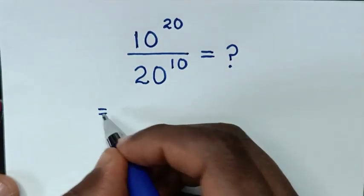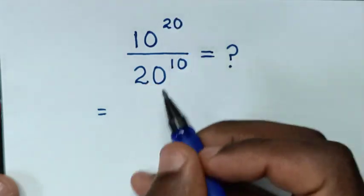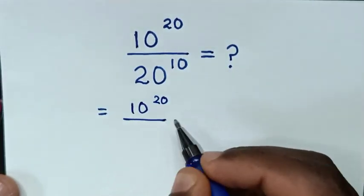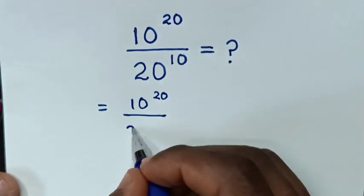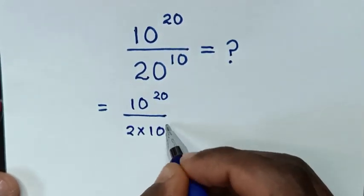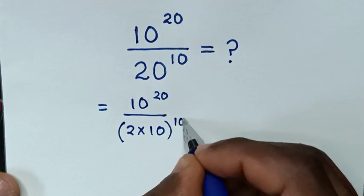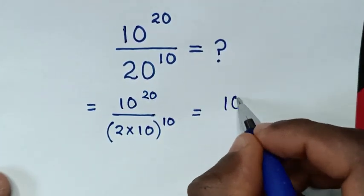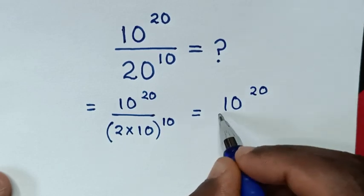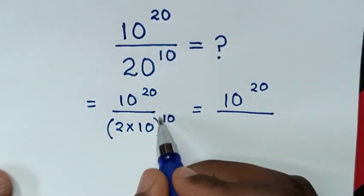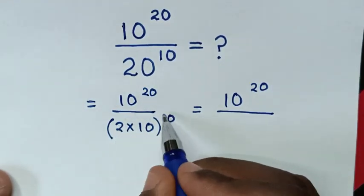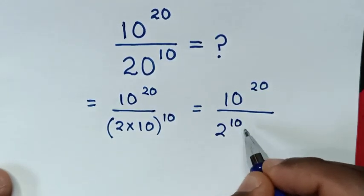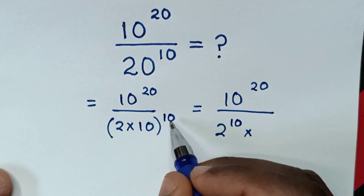It will be equal to — in the numerator it will be the same 10 power of 20, then over 20, which is the same as 2 times 10, then bracket power of 10. It will be equal to 10 power of 20, then over — we take this power of 10 inside the bracket — so it will be 2 power of 10, then times 10 power of 10.